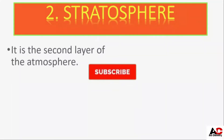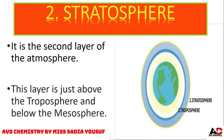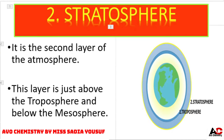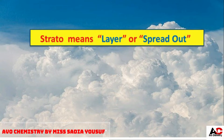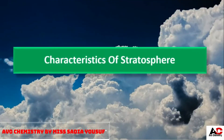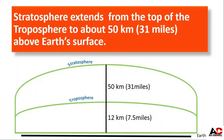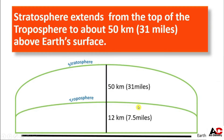Stratosphere. It is the second layer of atmosphere. This layer is just above the troposphere and below the mesosphere. 'Strato' means layer or spread out. What are the characteristics of Stratosphere? Stratosphere extends from the top of the troposphere to about 50 km or 31 miles above Earth's surface.